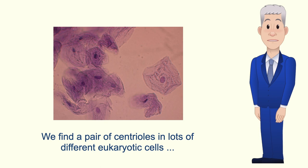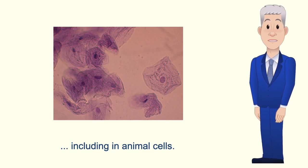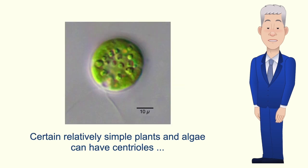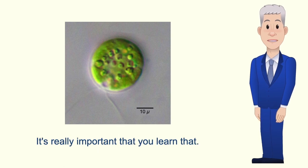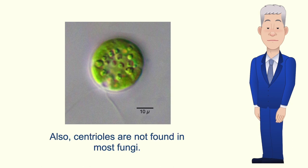We find a pair of centrioles in lots of different eukaryotic cells, including in animal cells. Certain relatively simple plants and algae can have centrioles, but we don't find centrioles in flowering plant cells — and it's really important that you learn that. Also, centrioles are not found in most fungi.